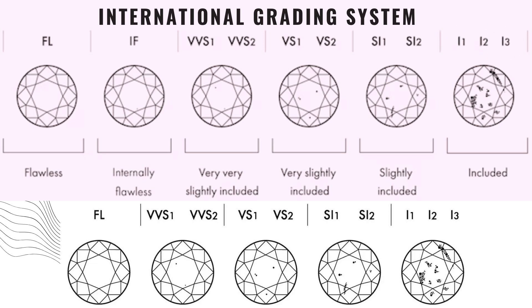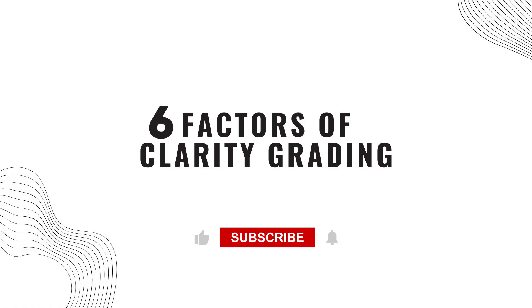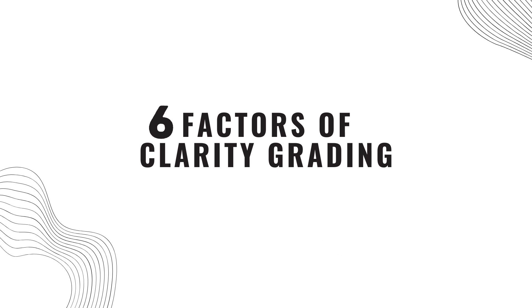Any of the stones that we get in the market is somehow categorized into one of these clarity grading categories. How exactly is it done? Six factors are very important to decide this clarity grade. The graders who grade each of these stones will consider these six factors. So let's get right into them — what are the six factors that determine the clarity grade of a stone?